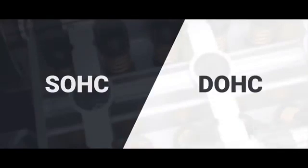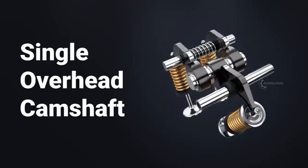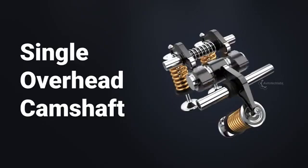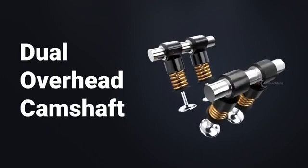SOHC and DOHC represent the valve configuration inside an engine head to control the action of the valves. Though these configurations are renowned for their superior performance, both have some significant differences. SOHC stands for single overhead cam, utilizing only a single camshaft for operating both intake and exhaust valves. DOHC, or dual overhead cam, on the other hand utilizes two independent camshafts for the operation of the intake and exhaust valves.